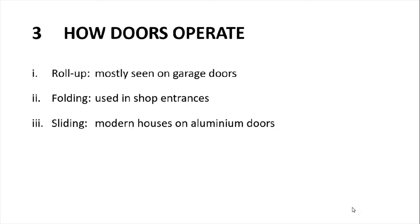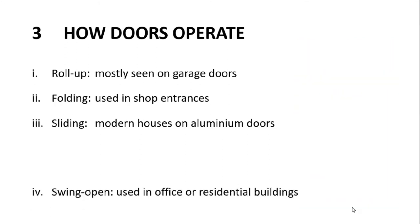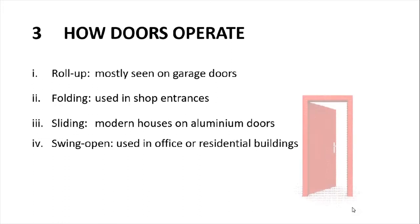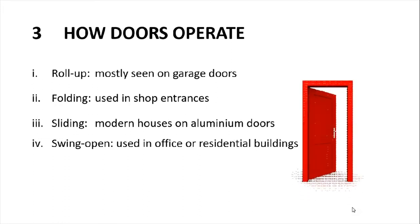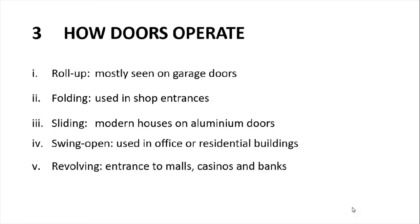Third: sliding doors. We also have some doors which open by sliding, mostly modern houses with aluminium doors. There's an example of a sliding door made out of aluminium; there are some made out of wood. Fourth: some doors swing open — they are hung on either side, left or right, used in offices or residential buildings. This is the most common way of operating a door. Fifth: some doors revolve, mostly at entrances to malls, casinos and banks, normally used for security purposes.